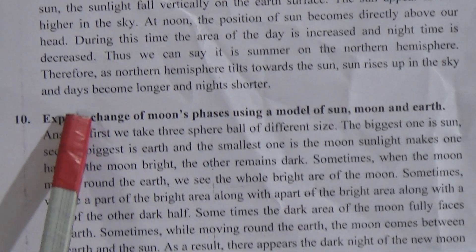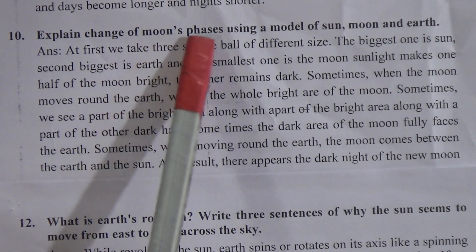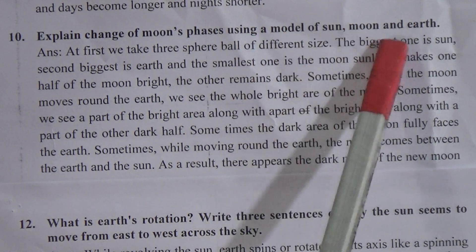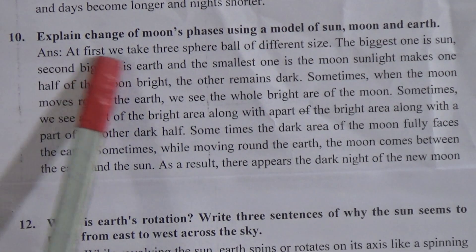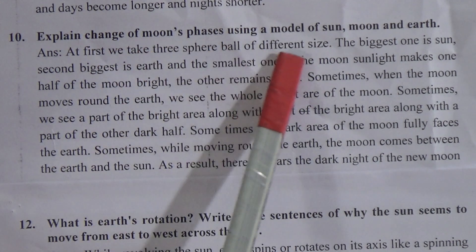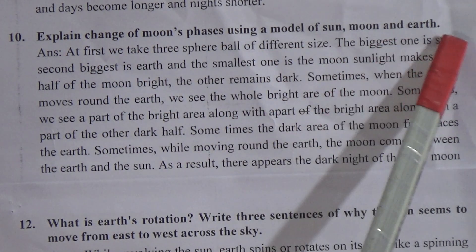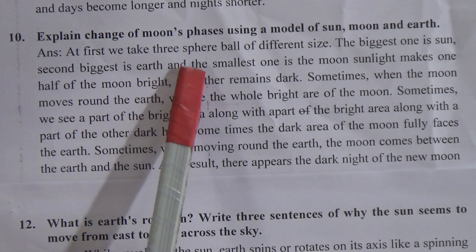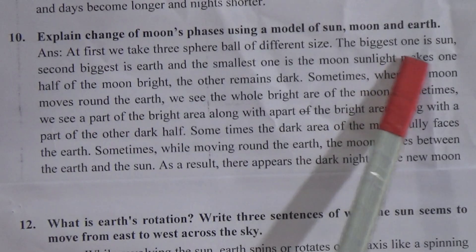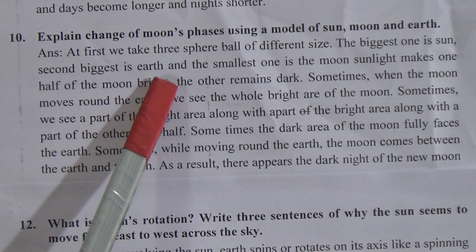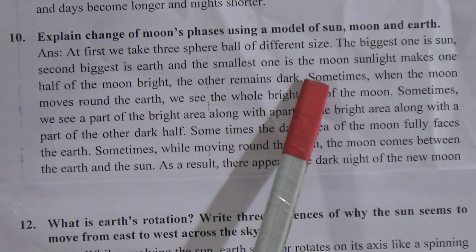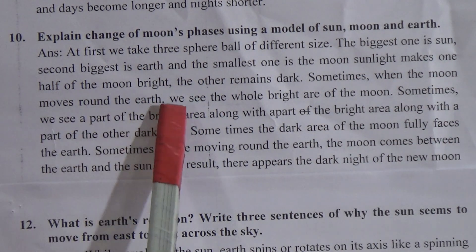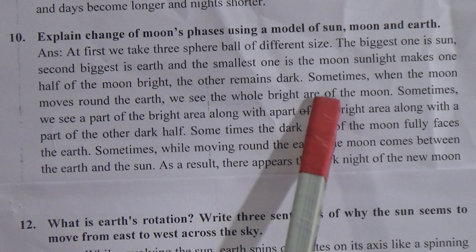Come to question number 10: explain the change of moon phases using a model of sun, moon, and earth. First, we take three balls of different sizes. The bigger one is the sun, the second biggest is the earth, and the smallest one is the moon. Sunlight makes one half of the moon bright; the other half remains dark. Sometimes, when the moon moves round the earth, we will see the whole bright part of the moon.